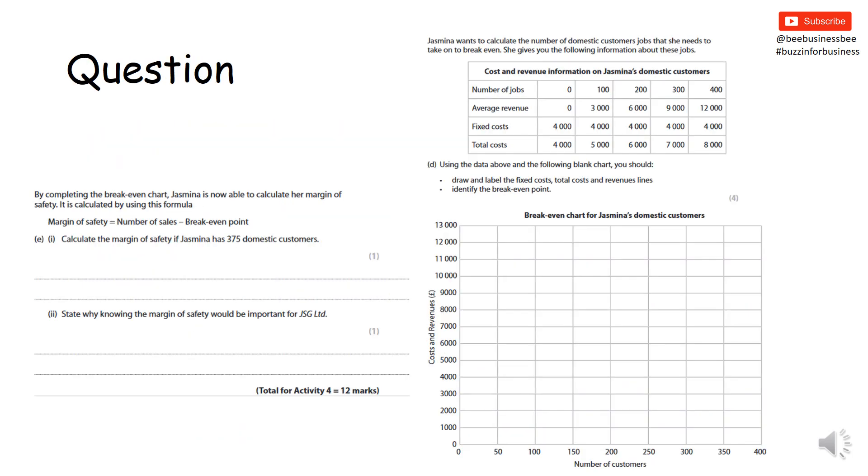Pause the video now whilst you have a go at this question and then unpause it to look at the answers. So the first thing you have to do is complete part D. You can see it's slightly laid out differently, mainly because I couldn't fit it on the screen otherwise. You have to draw and label the fixed cost line, the total cost line, the revenue lines, and then mark on the break-even point. So firstly, let's put on our fixed cost line. We know fixed costs are £4,000, so zero £4,000, 100 £4,000. You get the idea. Put the X's on, draw on a straight line and label it. I've not labeled it, so I wouldn't be getting the marks.